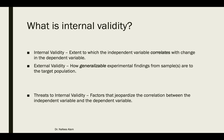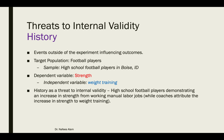Threats to internal validity are factors that jeopardize the correlation between the independent and the dependent variable. To understand this definition, it's easier to go through an example so the points are driven home. The first threat to internal validity we'll talk about is called history.